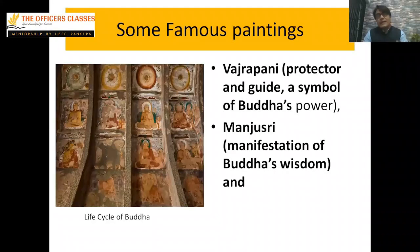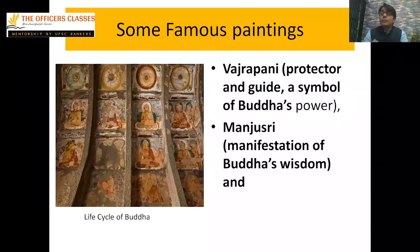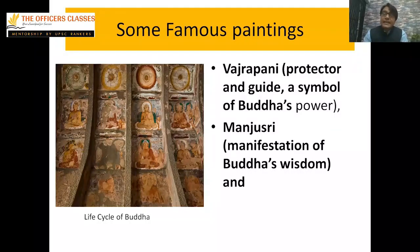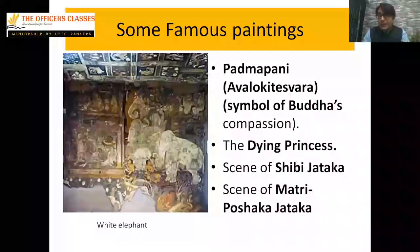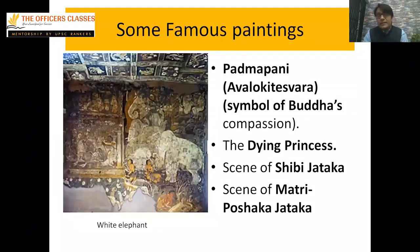Some famous paintings include: Vajrapani — meaning protector or guide, a symbol of Buddha's power; Manjushri — a manifestation of Buddha's wisdom; and Padmapani — a symbol of Buddha's compassion. Other famous paintings are the Dying Princess, the scene of Shibhi Jataka, and the scene of Maitri Poshak Jataka.